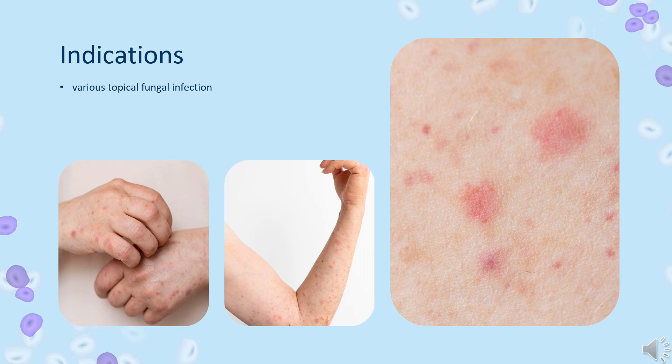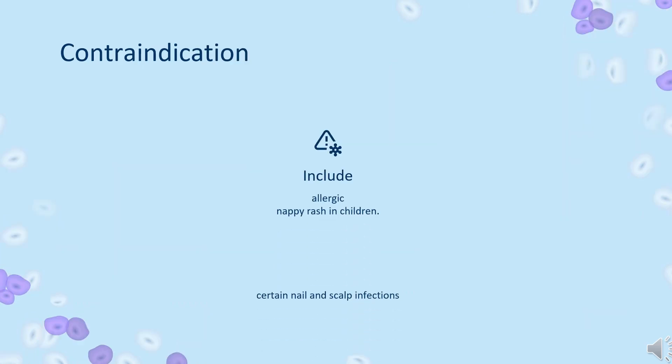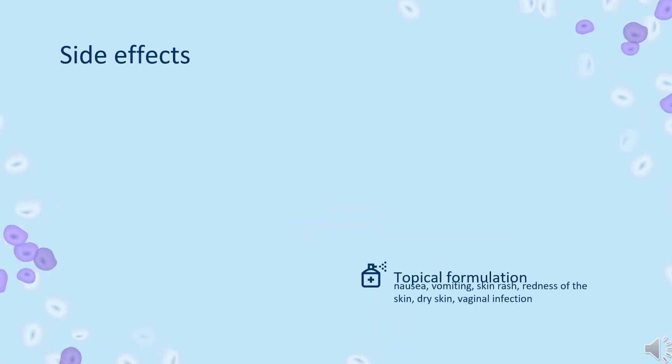Bifonazole is used for the treatment of various topical fungal infections including athlete's foot (tinea pedis). Contraindications: do not take if you are allergic to bifonazole or any ingredient of this medicine. Do not take this medicine for nappy rash in children, for certain nail and scalp infections, or for vaginal infections.